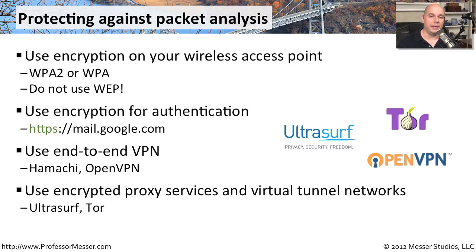There are also a number of public encrypted tunnels that you can use. Two of the more popular are UltraSurf and the Onion Router, which we often call Tor, but they have their own security concerns. Although you are encrypting the traffic over the wireless network, somewhere on the internet that traffic is being decrypted and put onto the internet in plain text form, and whoever's at that access location where your traffic is being decrypted can see all of it.